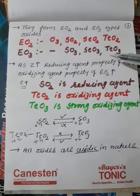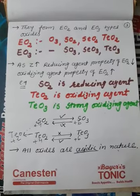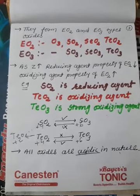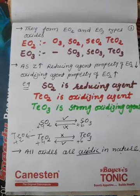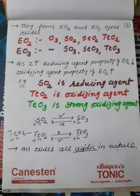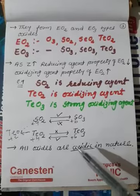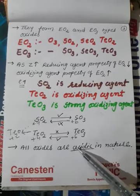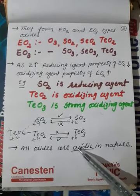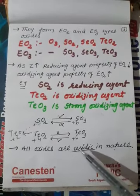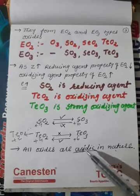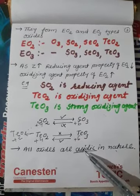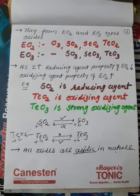Down the group, after non-metals come semi-metals, and then metals. However, note that all oxides of group 16 are acidic in nature because this is a highly electronegative group, and the metallic property is not typical here.